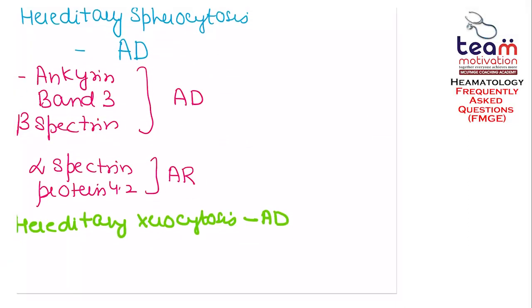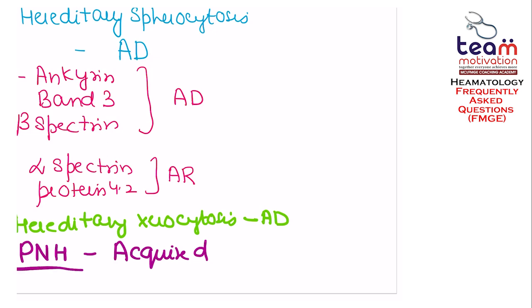Very important MCQ to remember: PNH — paroxysmal nocturnal hemoglobinuria — is an acquired condition. This is not congenital. This is one of the pet questions examiners frequently ask: paroxysmal nocturnal hemoglobinuria is an acquired condition.